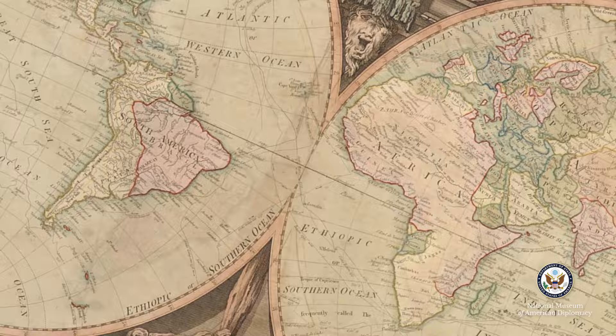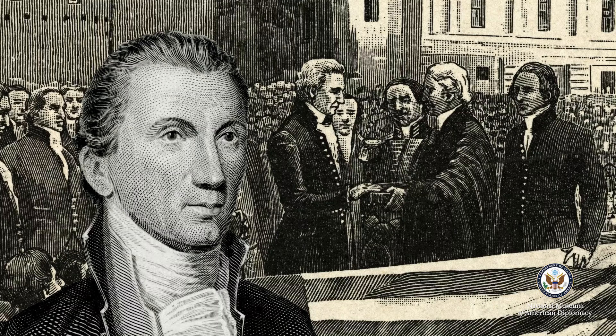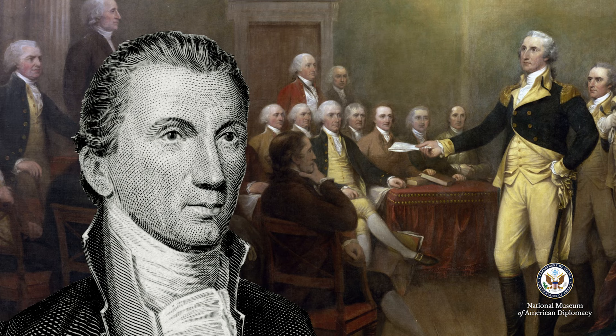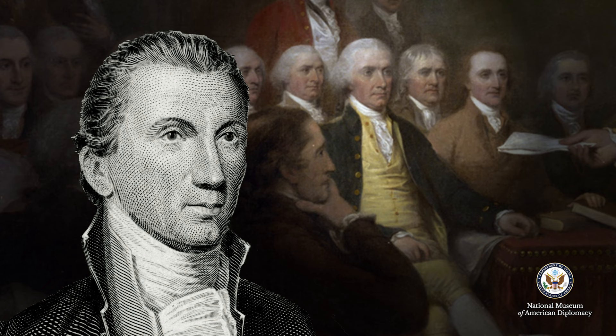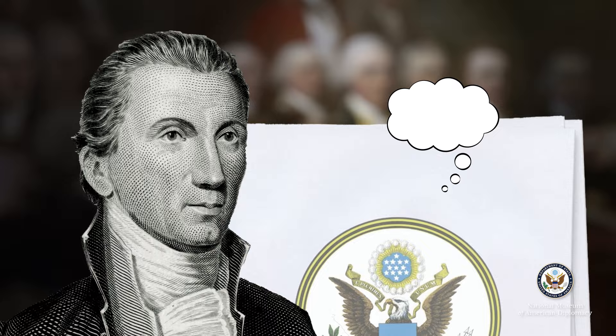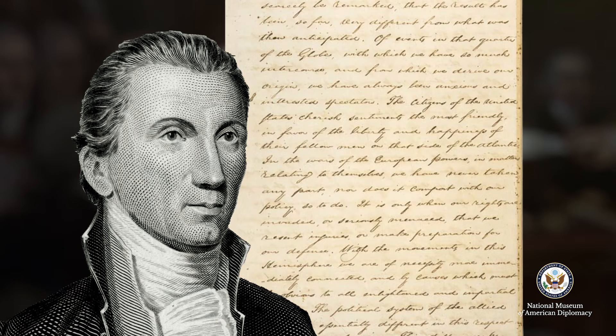Let's start by meeting James Monroe. Before he became the fifth president of the United States, he fought and was wounded in the American Revolution, served in state and federal government, and held several diplomatic posts. Through it all, he believed firmly in the American experiment. A doctrine is a principle or idea that influences a government's actions, and doctrines can become part of a country's foreign policy. The Monroe Doctrine began as part of an elaborate speech Monroe gave in 1823.